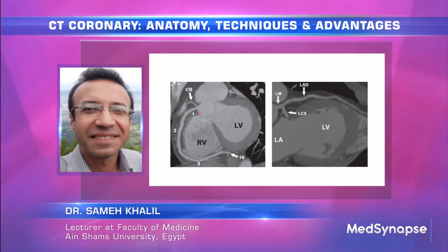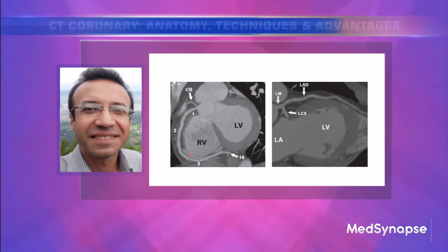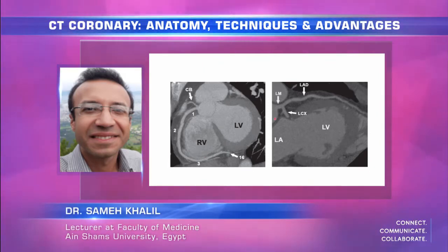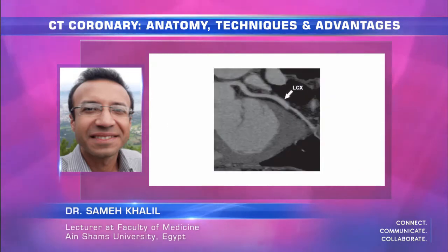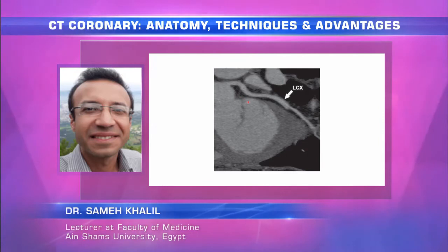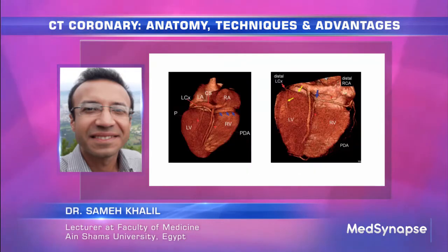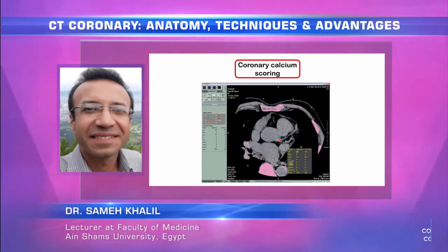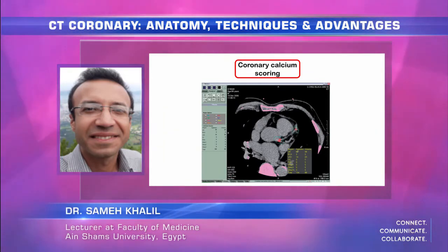This shows CT images of a normal right coronary artery in the form of curved multi-planar reformat, the left main system, the normal view of the left circumflex, and normal views of the coronary arteries, along with 3D reformat images.